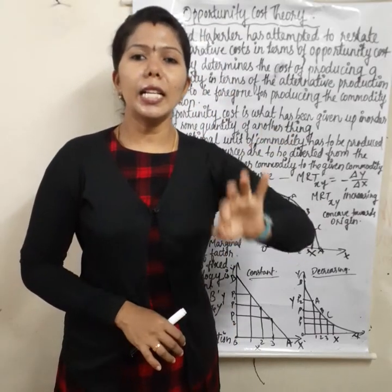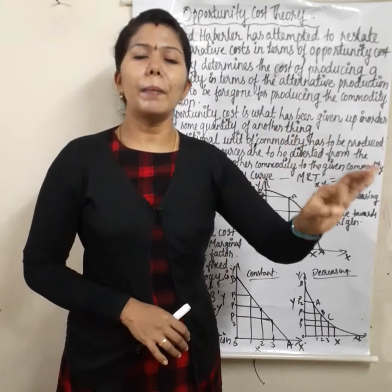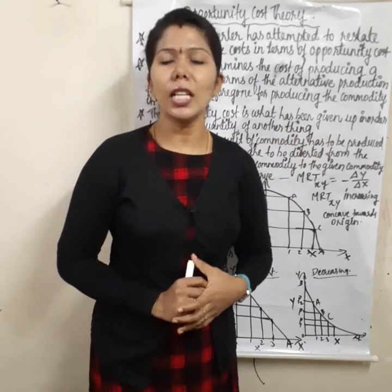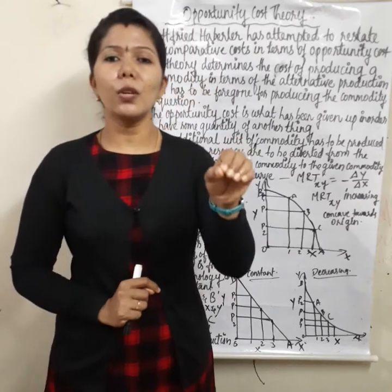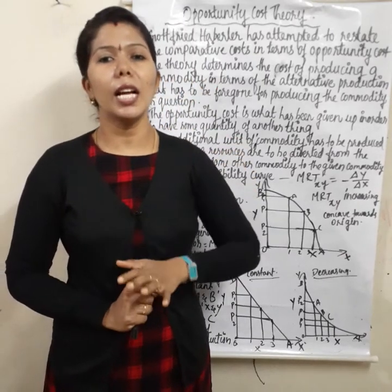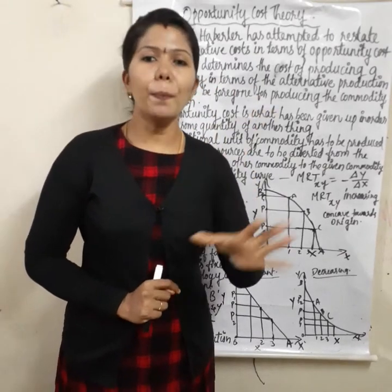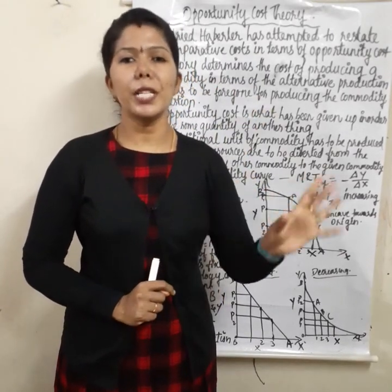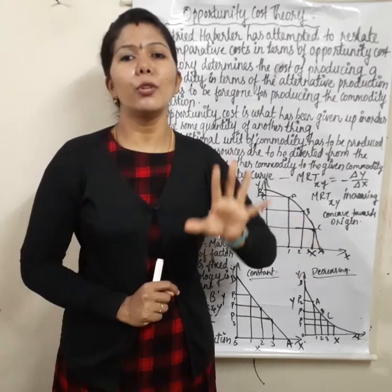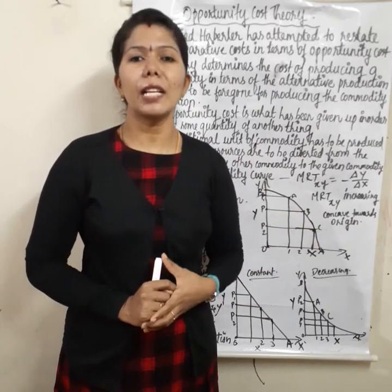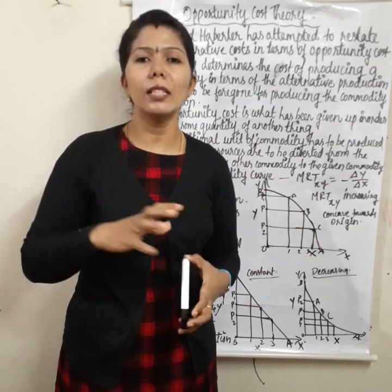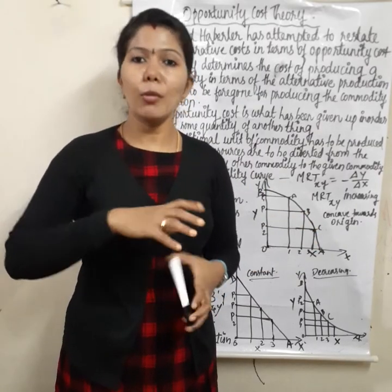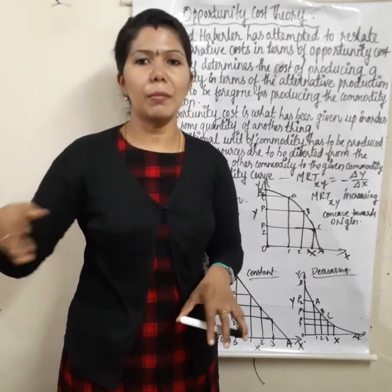This is the production possibility curve for the opportunity cost theory. For two countries, we will use the opportunity cost. One country will have a different opportunity cost from another, and that difference is the basis for trade.